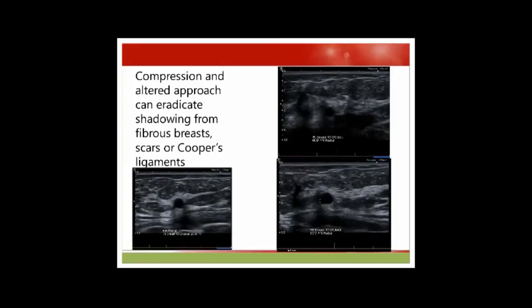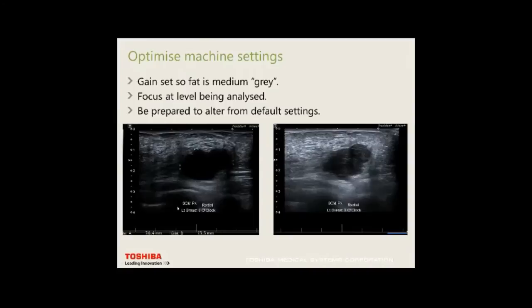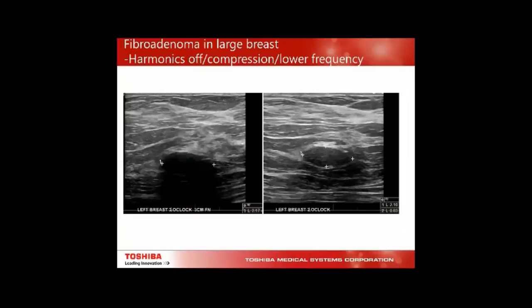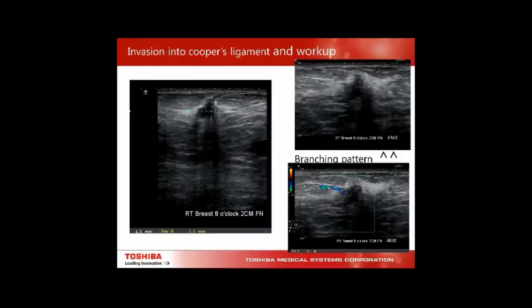Compression and altered approach can eradicate shadowing from fibrous breast scars or Cooper's ligaments. Using a two-handed technique — making the breast poke up with the second hand and coming across — can reveal that something is actually just a normal cyst. The gain should be set at a medium grey; what initially looks like a large cyst can, with correct gain or TSO, reveal itself as a lobulated cancer.